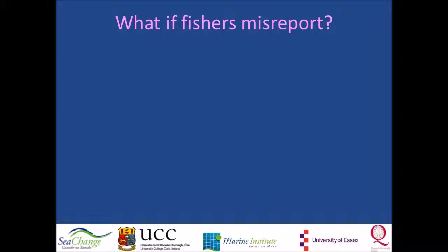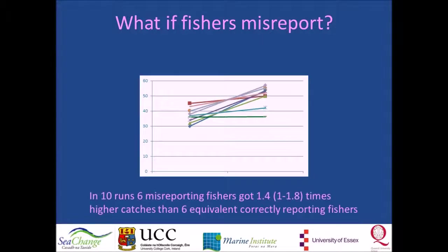The second question deals with misreporting. The objection raised was that fishers experience an incentive to misreport high catches to other cells, thereby artificially lowering the tariffs of cells with high abundance, where they can subsequently fish at cheaper rates and thus continue fishing longer before their RTI account is exhausted. In this particular scenario, with six misreporting fishers and six equivalent fishers reporting correctly, the misreporting fishers achieved on average 1.4 times higher catches. Among ten simulation runs, this advantage ranged from 1 to 1.8. So indeed, there is an incentive to misreport.